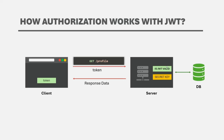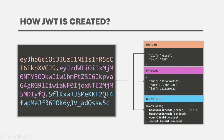Now let's understand how JWT works and what it consists of. A JSON Web Token is a base64 encoded string and it consists of three parts: the header, the payload, and the signature. Each part is separated by a dot — you can see two dots in the base64 string acting as separators. The first part is the header, which is a base64 encoded string. When decoded, it contains metadata about the token itself — for example, what algorithm is used for encoding and what type of token it is, such as JWT.